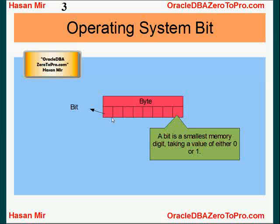A bit can only contain either zero or one, which is not very meaningful, because we want to store more meaningful information like characters — A, B, C, or the many different characters on your keyboard. A bit is not enough for that. Computers work on a zero and one basis, so what we need is to group multiple bits together.